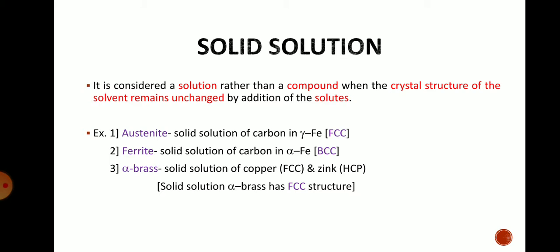The third example is alpha brass. It is a solid solution of copper and zinc. Copper has an FCC structure and zinc has an HCP structure. The resulting solid solution, alpha brass, has an FCC structure, meaning it inherits the structure from copper, the solvent. This confirms that the solvent's crystal structure is maintained in a solid solution.